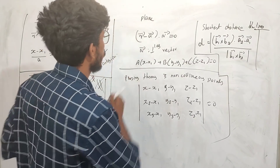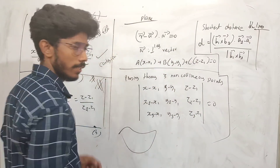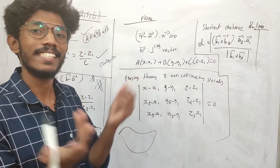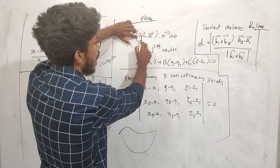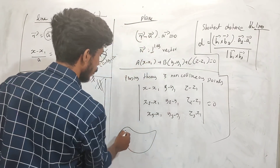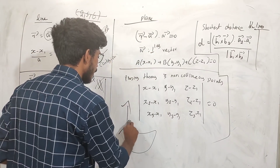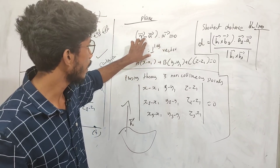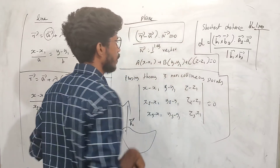Next, plane. If you have the surface of a plane — plane means surface. The vector equation of a plane is (r − a) · n = 0. This is the actual expression; that is the vector equation.